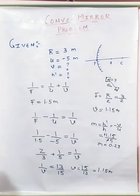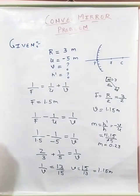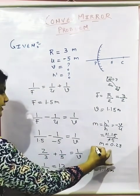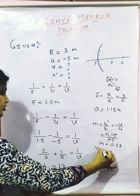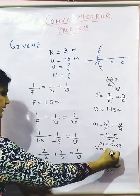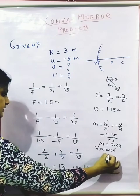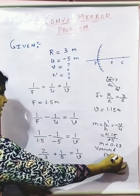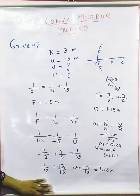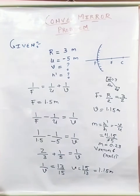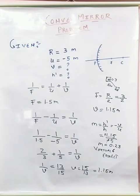0.23. So this shows that your image will be virtual and erect. Image will be virtual and erect, and size will be small. So this way we are going to solve this.